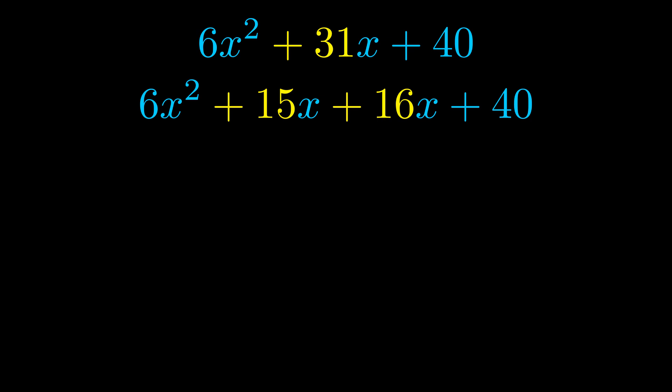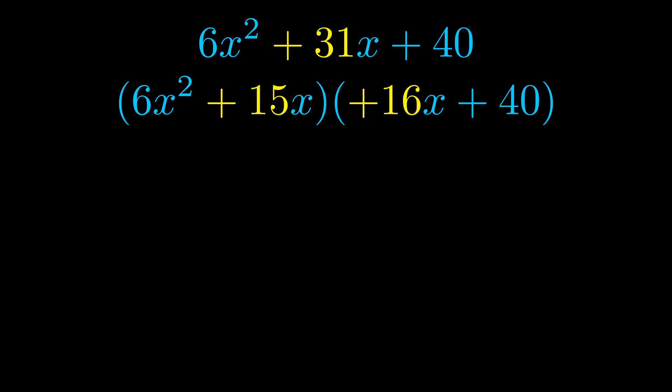Once we've done this we go ahead and we put parentheses around the first term and the last term. And we do that so that we can take the greatest common factor out of both terms. We can see the greatest common factor is now outside in green.